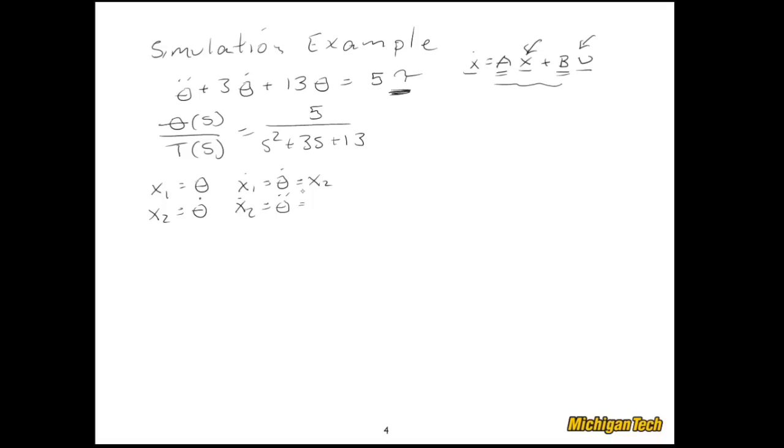And x2 dot is theta double dot. And that is nowhere to be seen in our state variable definitions. However, I can get it straight from this equation. Specifically, it's negative 3 theta dot, minus 13 theta, and plus 5, and instead of tau, I'll just call it u. And so, that's negative 3, theta dot is x2, and theta is x1. And again, we have this input.